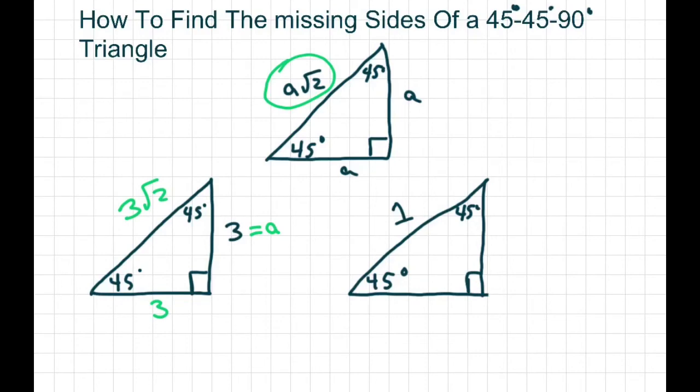And for this one, we have – this is our hypotenuse, the side across from 90 degrees, and that equals A square root of 2.